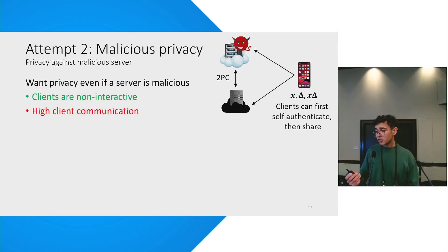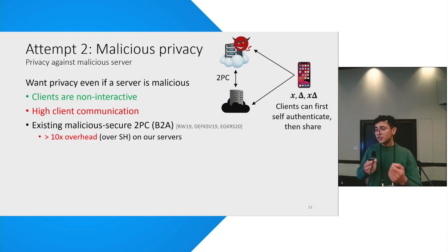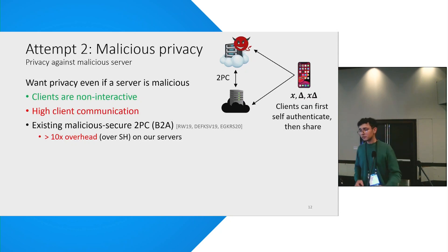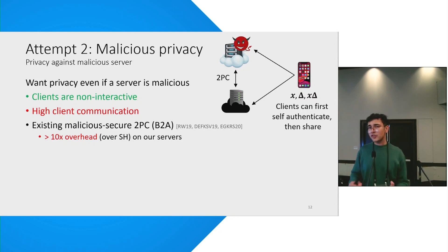But the other two problems still remain. We have high client communication still, and on top of that the 2PC that runs between the servers — even if you plug in the best state-of-the-art malicious secure 2PC — you're looking at an overhead of more than 10X over the semi-honest protocol. So even with our insight, we haven't really solved the problem, and the problem is still wide open.